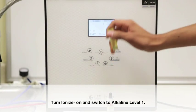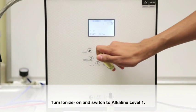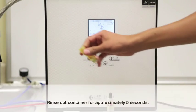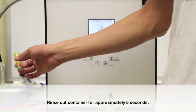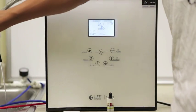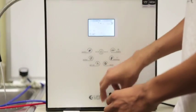You want to turn the ionizer on, alkaline level 1. You want to rinse out your container for approximately five seconds prior to testing the water. Pour out the rinsed out contaminants.